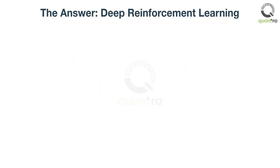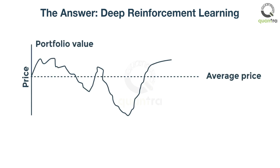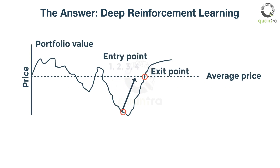The answer to this conundrum is deep reinforcement learning — a technique that solves the problem of delayed reward based on a chain of decisions. In reinforcement learning, we train a system by looking at the final outcome. We then go backwards to assign an implied reward to every action we took at each point. This helps us build a library of experiences, so that in the future, we can make the right decisions in order to maximize our reward.